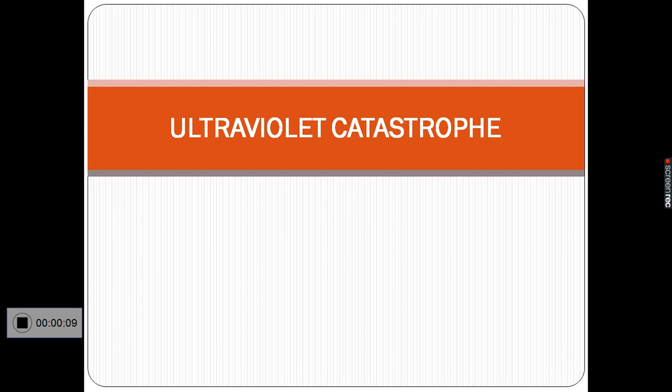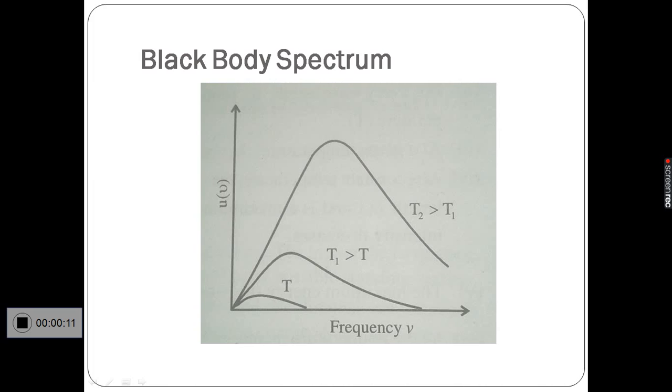Ultraviolet Catastrophe. A black body is a body with equal emissive and absorptive power. The black body spectrum gives the distribution of radiant energy from a black body over different frequencies.